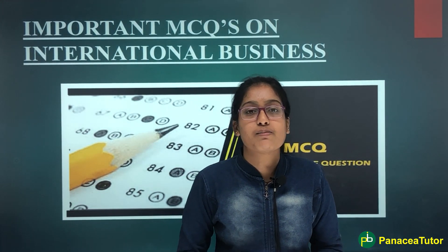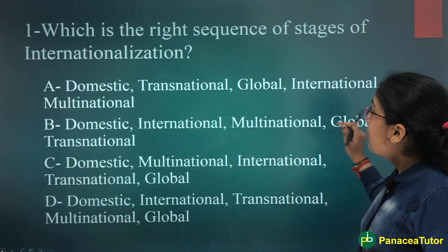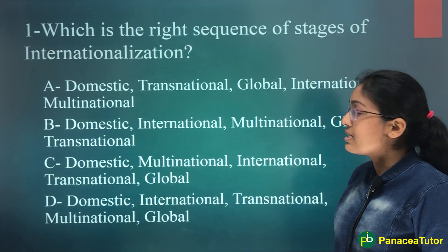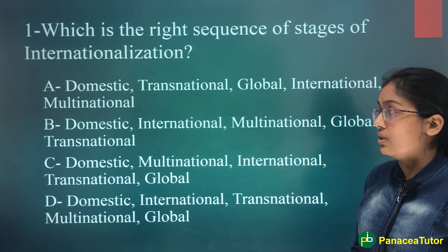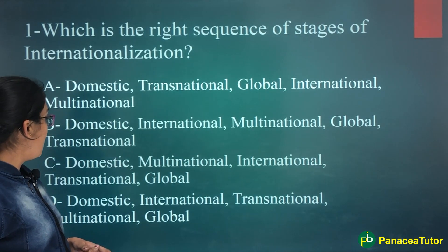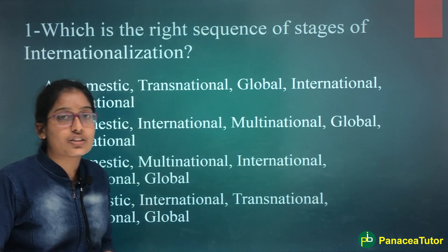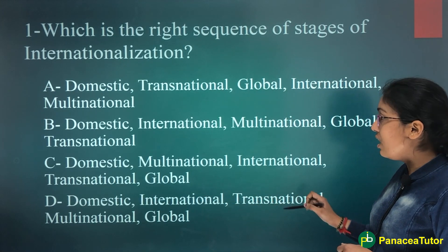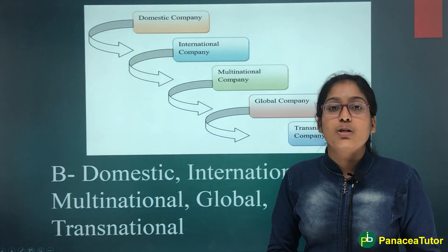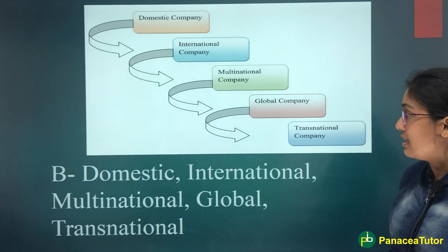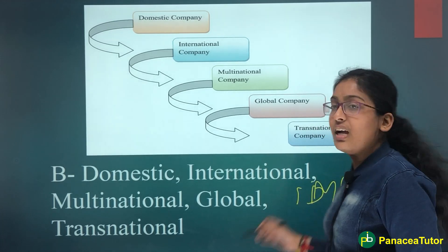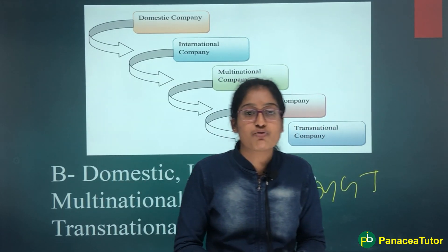Ab hum discuss karne ja rahe hain kuch important MCQs on International Business. Very first question: Which is the right sequence of stages of internationalization? Option A: Domestic, Transnational, Global, International, Multinational. Option B: Domestic, International, Multinational, Global, Transnational. Option C: Domestic, Multinational, International, Transnational, Global. Option D: Domestic, International, Transnational, Multinational, Global. The answer is Option B. To remember this, there is a simple trick: DIMGT — and MGT stands for management shortfall.